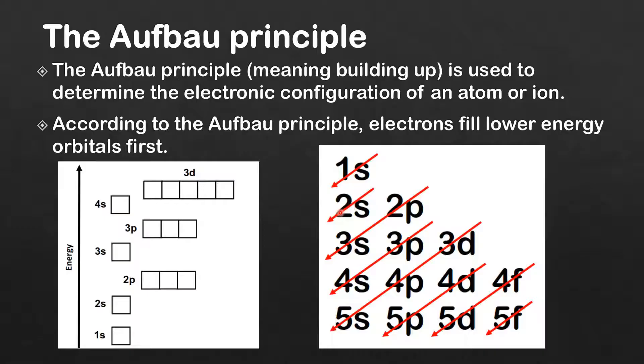Then we fill the 2s orbital, then the 2p, then the 3s, then on to the 3p, and then the 4s orbital. Now the 4s orbital fills before the 3d orbitals because, as you can see here, the 4s orbital is lower energy than the 3d orbitals.